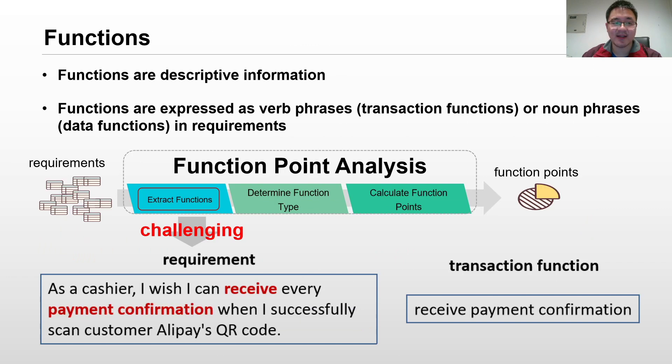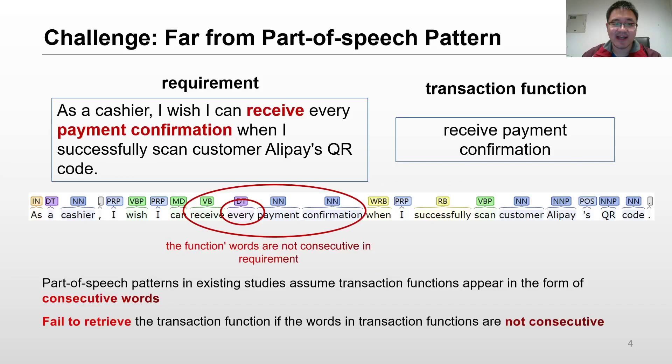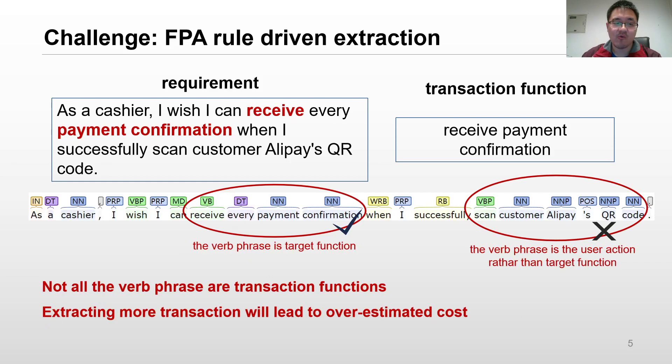Functions are descriptive information. They are expressed as a verb phrase or noun phrase. The first challenge is that the functions are far from the part-of-speech pattern, since the words in a function are not always consecutive. The second is that FPA is rule-driven, which requires the approach to distinguish which phrases are related to a function.